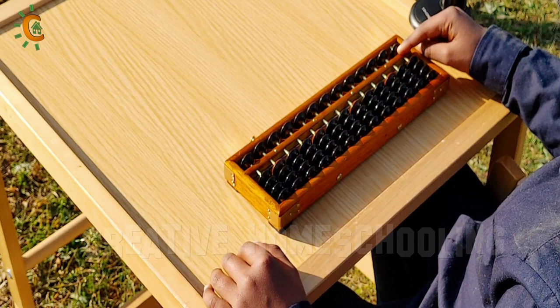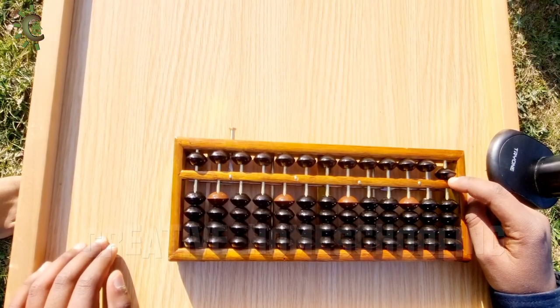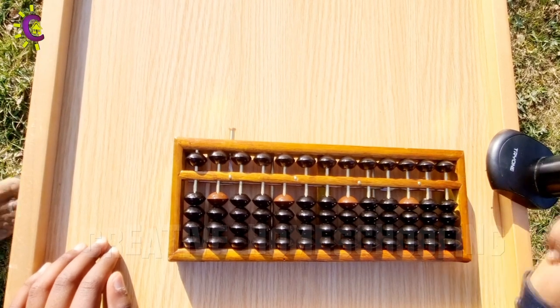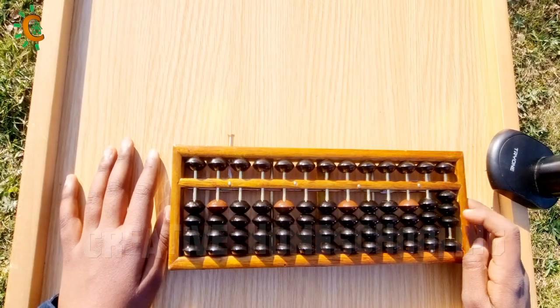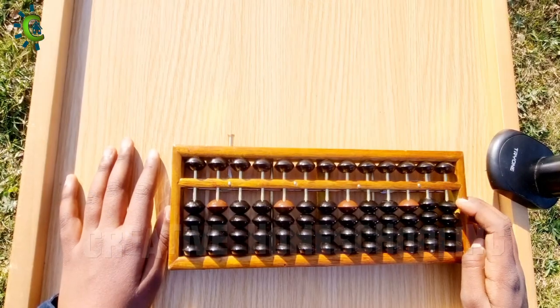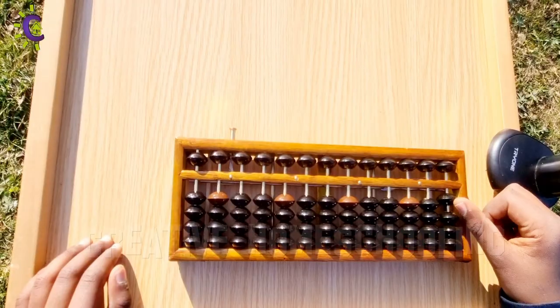Use the index finger to move five unit beads up and down and to move one unit beads down. But use the thumb to move one unit beads up.